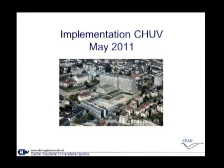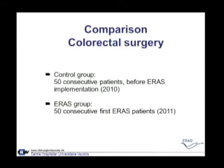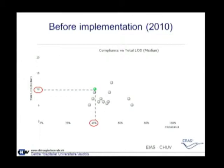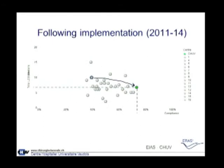Implementation took place at the University Hospital of Lausanne — a thousand-bed academic center with all specialties including transplantation. We started in colorectal surgery, comparing 50 consecutive patients before and after ERAS. We thought we were good, but we were not. Before ERAS: pre- and intraoperative compliance was low, postoperative compliance was about 25% — a catastrophe. We had 40% global compliance and a 10-day length of stay for colonic resection. Following implementation, we improved dramatically — down to 6 days and almost 80% compliance.